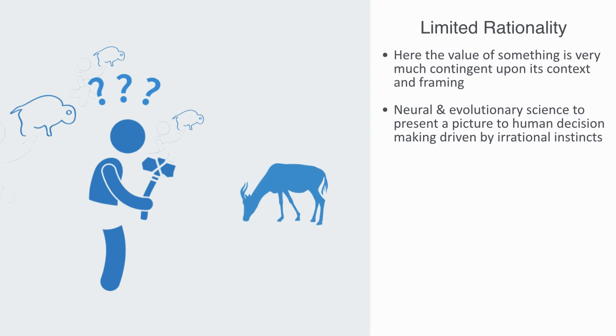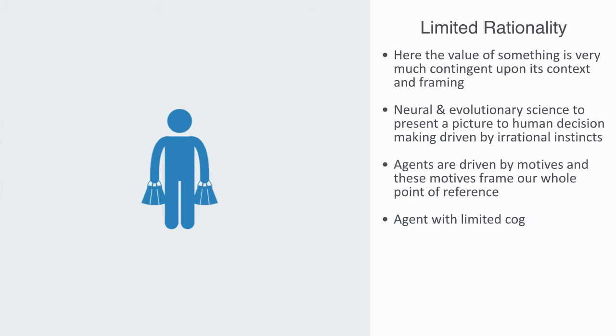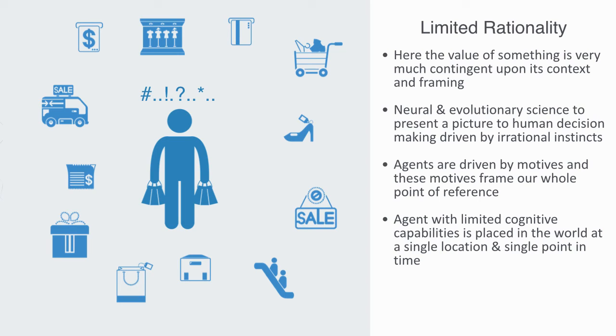rational reasoning based upon objective information. Agents are driven by motives, and these motives frame our whole point of reference. So if your care motive or fear motive are activated, then you will interpret information through this context. You will interpret signs differently, seeing cues that symbolize these things more readily. Motivation, organizing our perception, is very different from the computational model of how humans interpret and process information. This agent with limited cognitive capabilities is placed in the world with a single location at a single point in time. In this scenario,